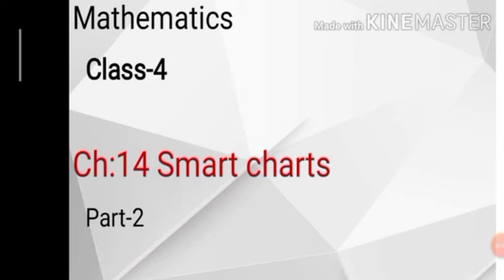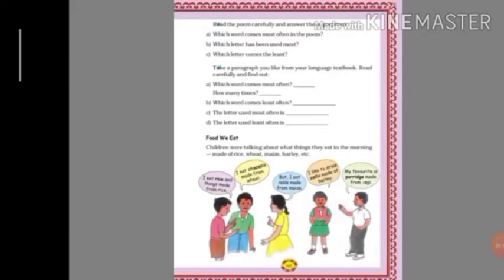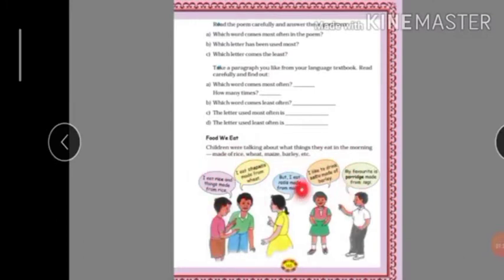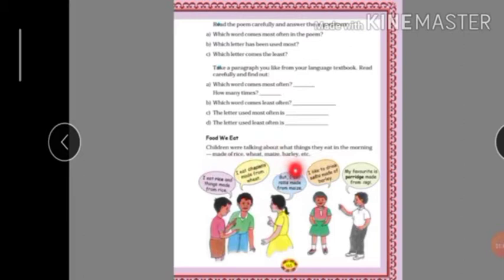Let's continue our chapter. Open page number 165. The topic is 'Food we eat.' Children were talking about what they eat in the morning — foods made of rice, wheat, maize, and barley. Barley is one of the cereals.